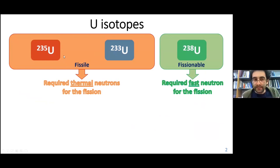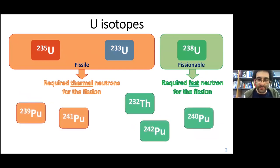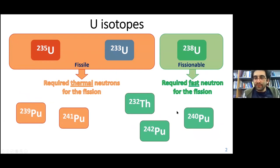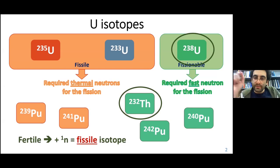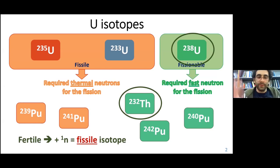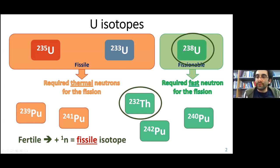There are also other isotopes that can be used in the nuclear reactor, for example thorium and plutonium. Those three uranium isotopes are fissionable, requiring fast neutrons, and the fissile isotopes are uranium-235 and uranium-233. Among the fissionable isotopes, we can find also some called fertile isotopes. Fertile means that if those isotopes acquire one neutron, they can become fissile. For example, thorium-232 plus one neutron becomes uranium-233, and uranium-238 plus one neutron becomes plutonium-239. So from fissionable to fissile material.